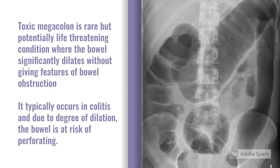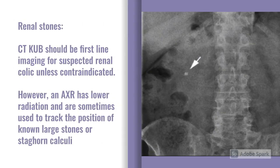Moving away from the bowel, just quickly touching on kidney stones — if you're worried about renal colic, we should really be doing CTKUBs as our first-line imaging. X-rays are essentially quite a large dose of radiation without giving you the answer you need, and they often won't pick up small stones, whereas CTs are much more sensitive. But you might see abdominal x-rays used in an outpatient setting where, if you're known to have a large kidney stone, it's sometimes helpful to track that stone's migration through the ureteric system, or the absence of it migrating — i.e. being stuck in the kidney.